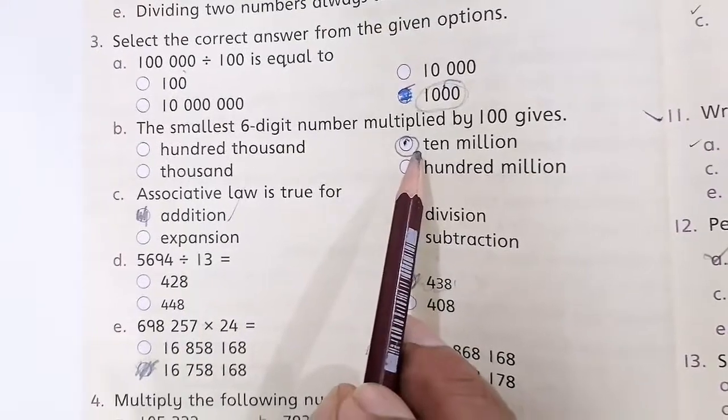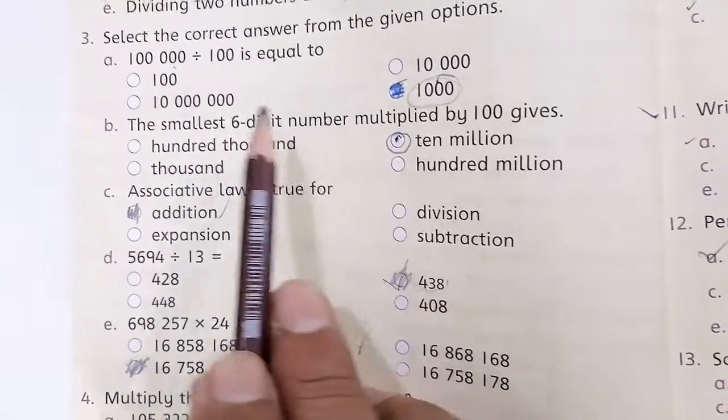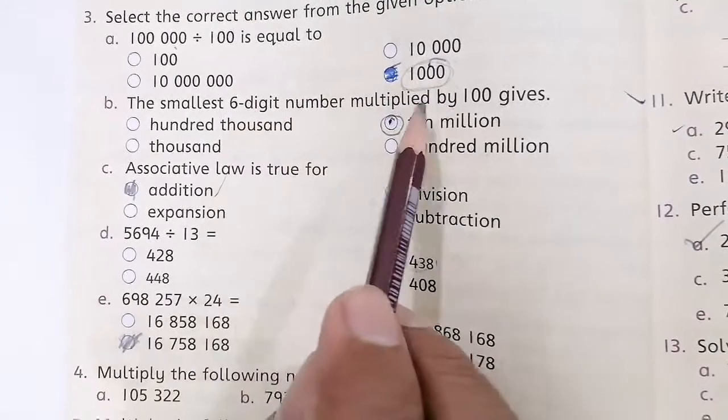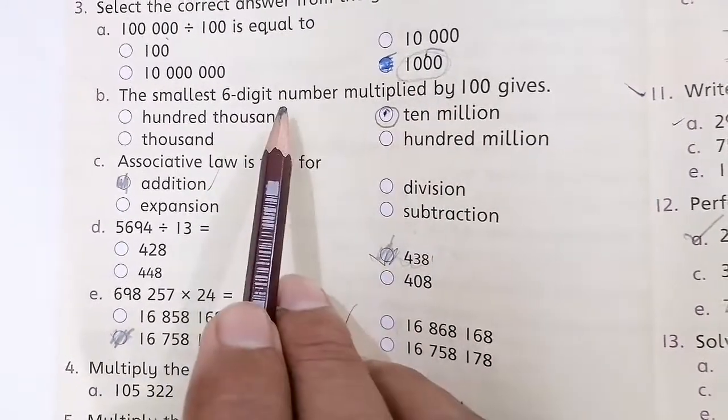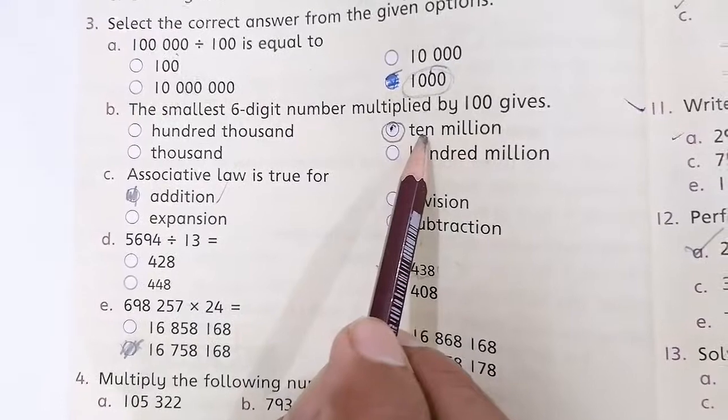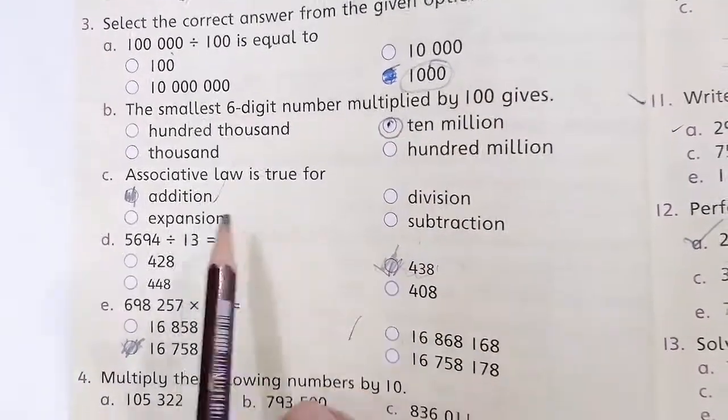You will have 8 digit numbers. Smallest six digit number, which will add two digits more. Then if you add eight digit, then it will be ten million.